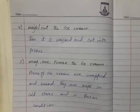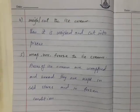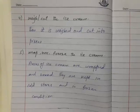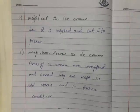Then it is weighed and cut into pieces. Fifth one, wrap, box, freeze the ice cream. We have changed it properly like pieces of ice cream are wrapped and boxed. They are kept in the cold stores in frozen condition.